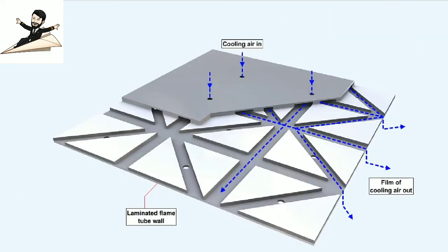Other engine designs use a different method of cooling the air casing, which is called transpiration cooling, where a film of air flows between laminations which form the flame tube wall and then exits the laminations to form an insulating film of air within the flame tube.